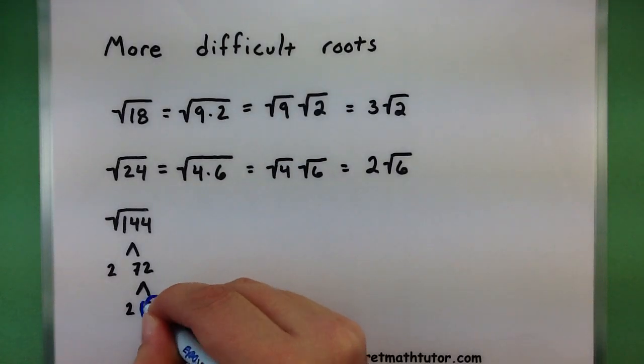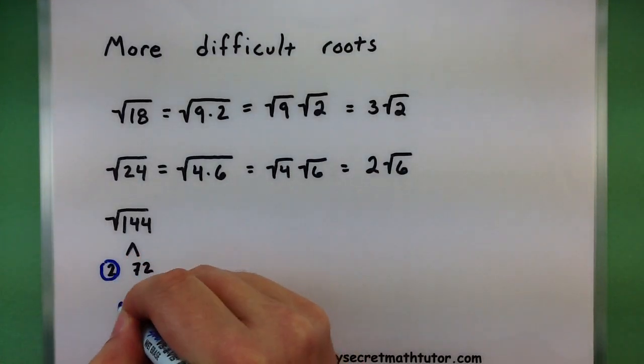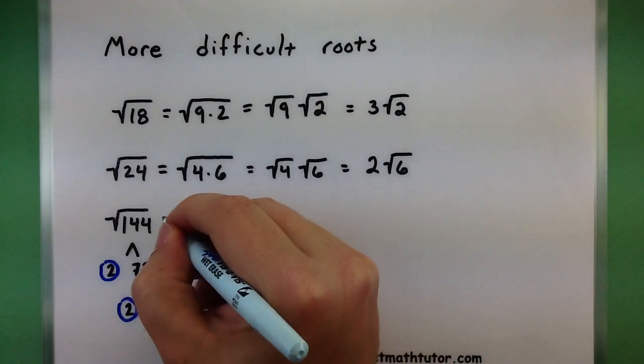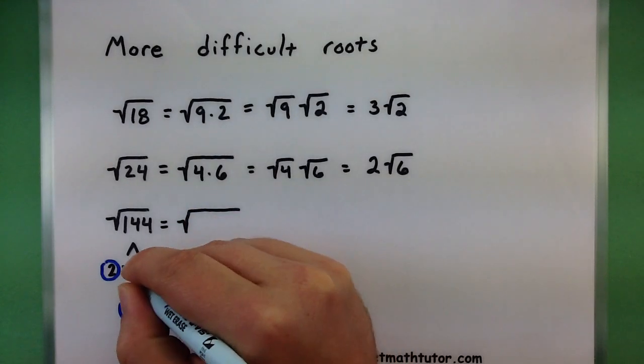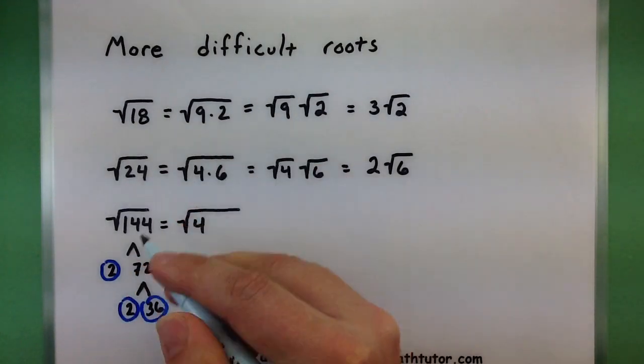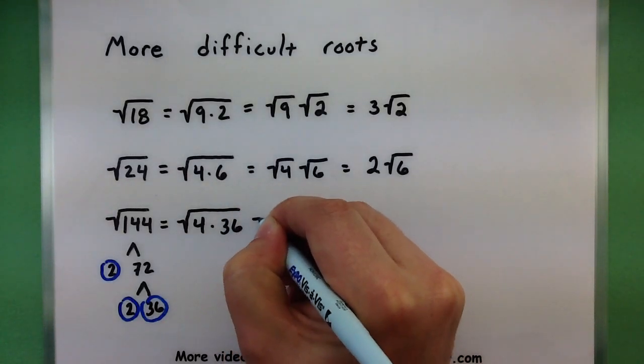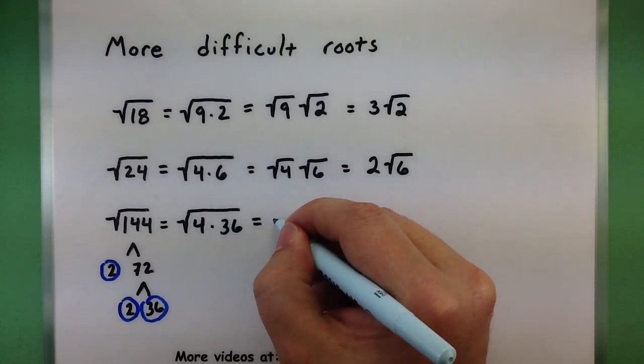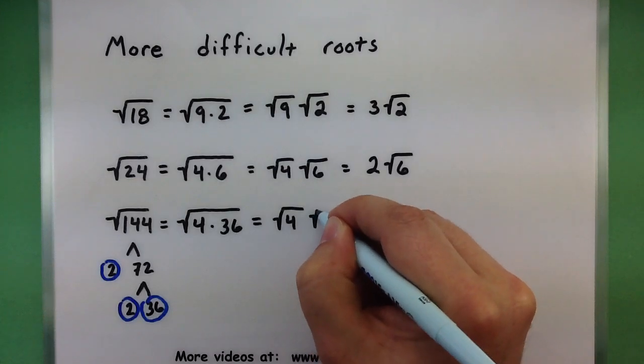36 is the same as 6 squared, or 6 times 6. So I can take that number, along with the other numbers we've broken it down into, and put those underneath our square root. So 2 times 2 is the same as 4. I'll take these two, and a 36. So by looking at some of those smaller numbers now, I can really look at this problem as the square root of 4 and the square root of 36.